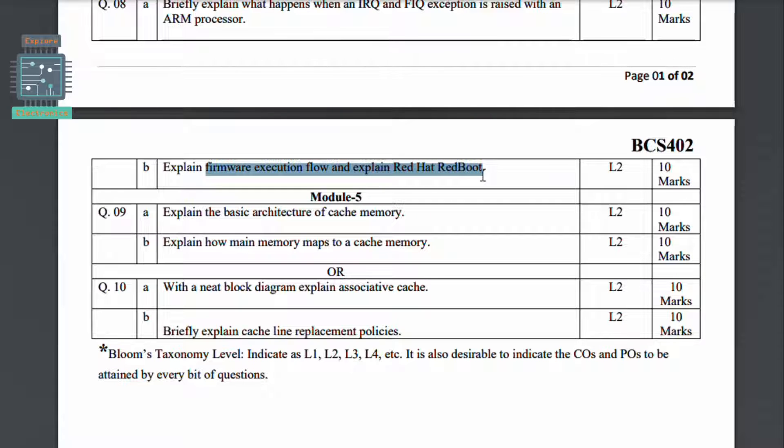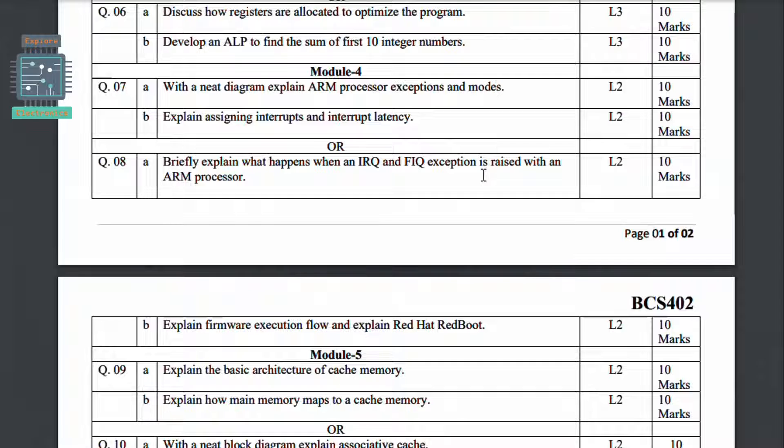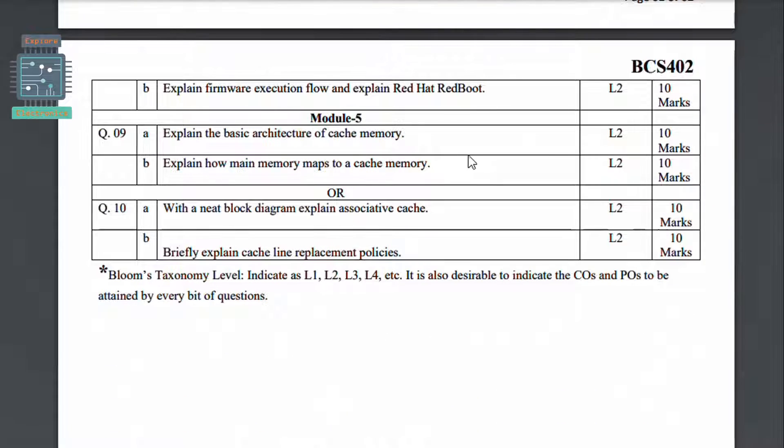Coming to Module 5, this is with respect to cache memory. Explain the basic architecture of cache memory and explain how main memory maps to a cache memory. This is very important to understand the cache memory and the types and how the main memory will be associated with respect to the cache memory.